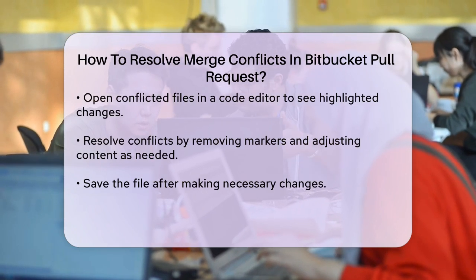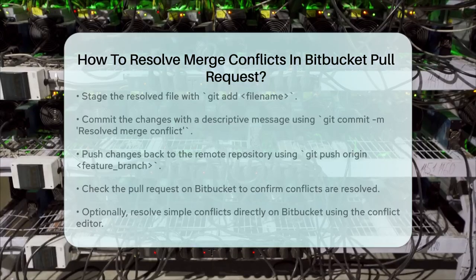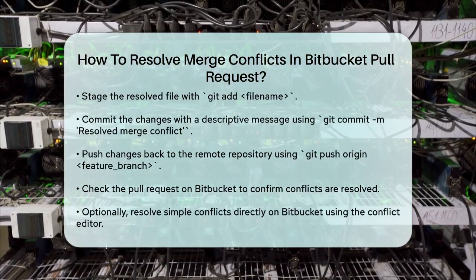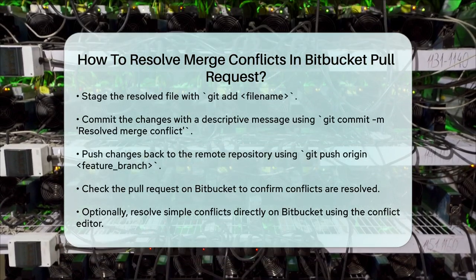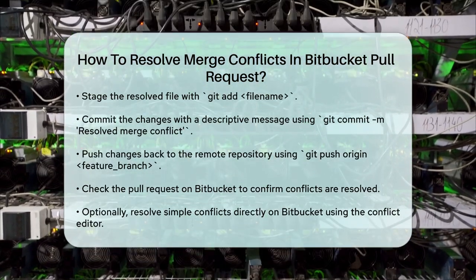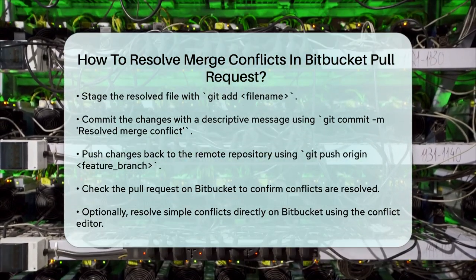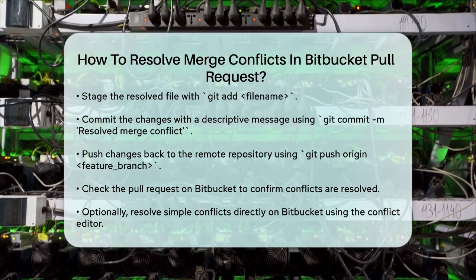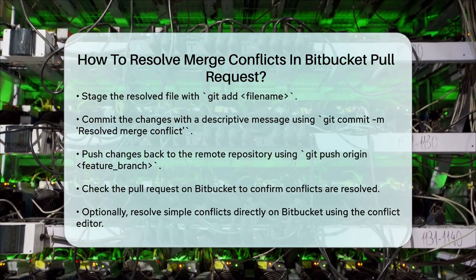Finally, push the changes back to the remote repository using git push origin feature-branch. When you check the pull request on Bitbucket, it will no longer show any merge conflicts.